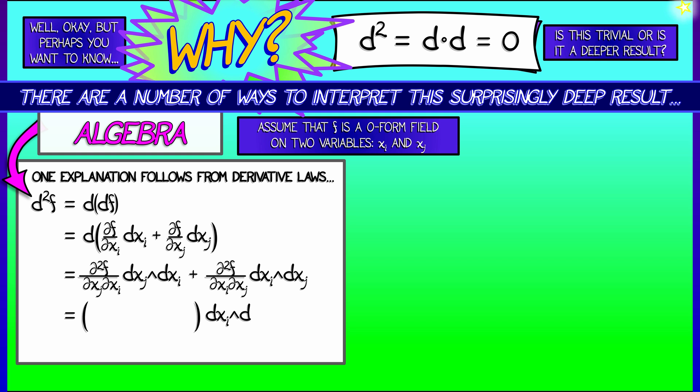So that when we factor out the dxi wedge dxj, what happens is we get the second partial in f partial xi partial xj minus the second partial in f partial xj partial xi. And we see that this is zero precisely because of two reasons, the fact that mixed partials commute and the fact that the wedge product is anti-symmetric.